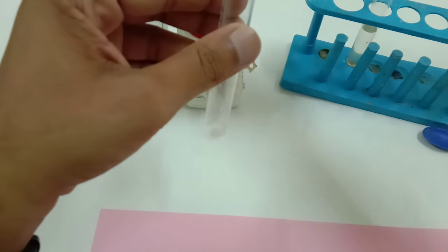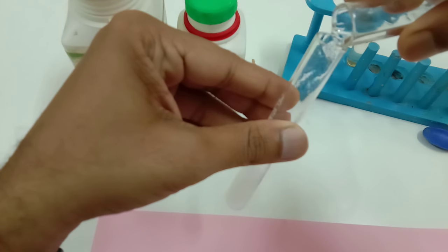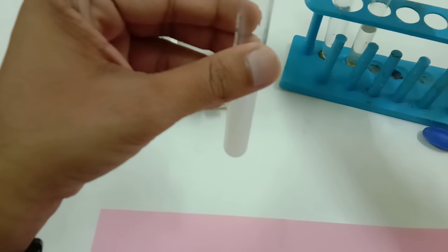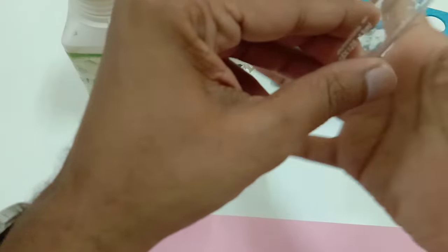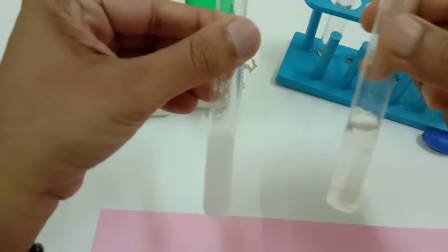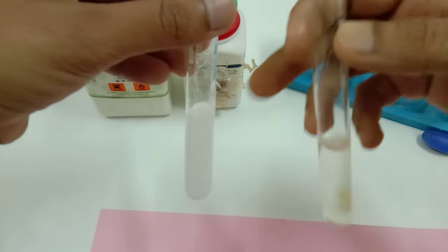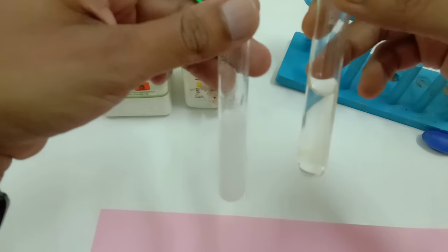Now this is Pb(NO3)2 powder, lead nitrate. I am going to add water in it, shake it well. Now Pb(NO3)2, this is the aqueous solution. This is the aqueous solution of potassium iodide.